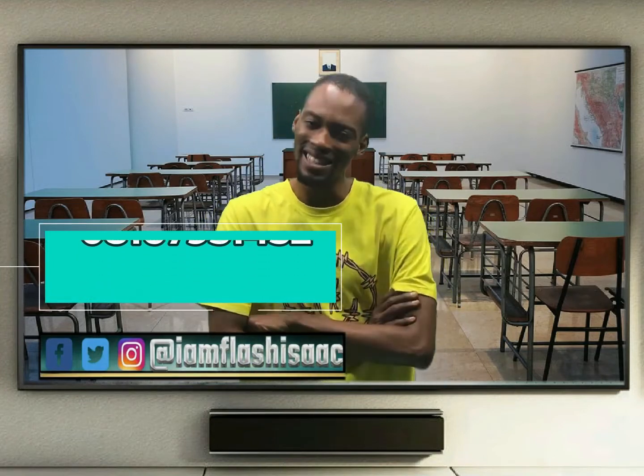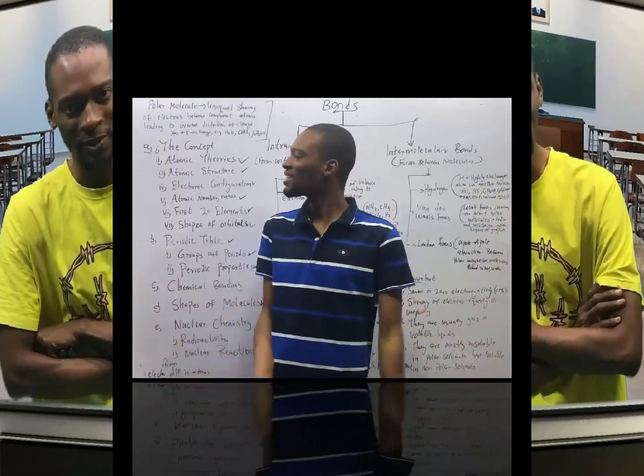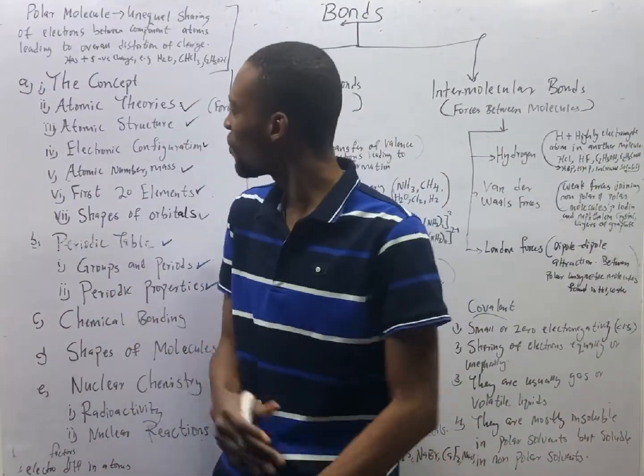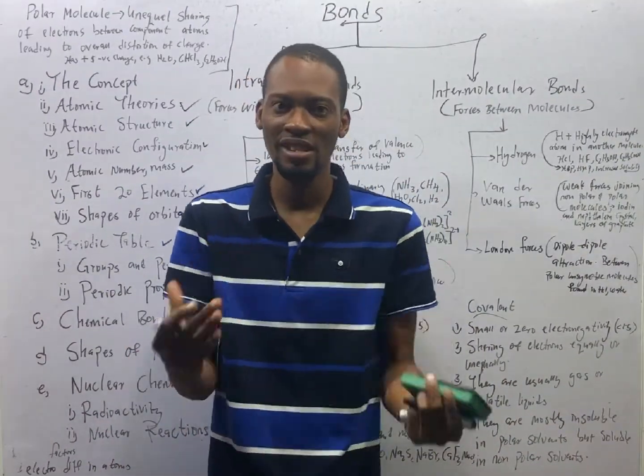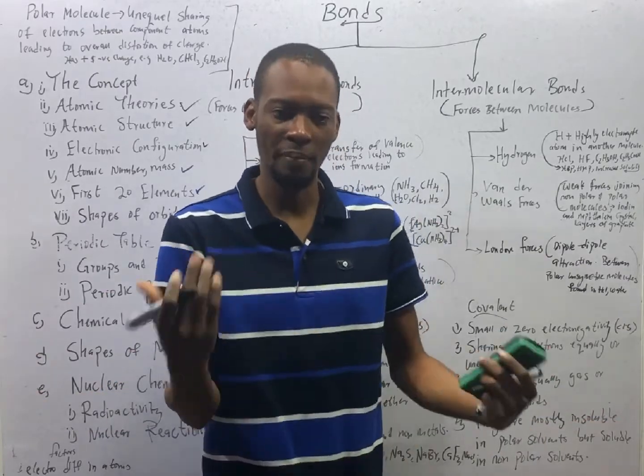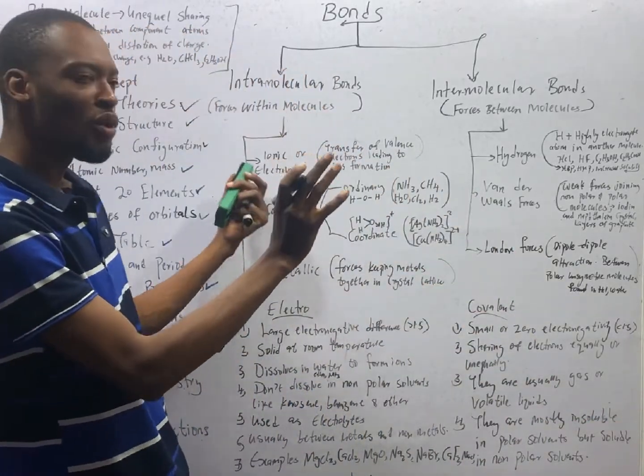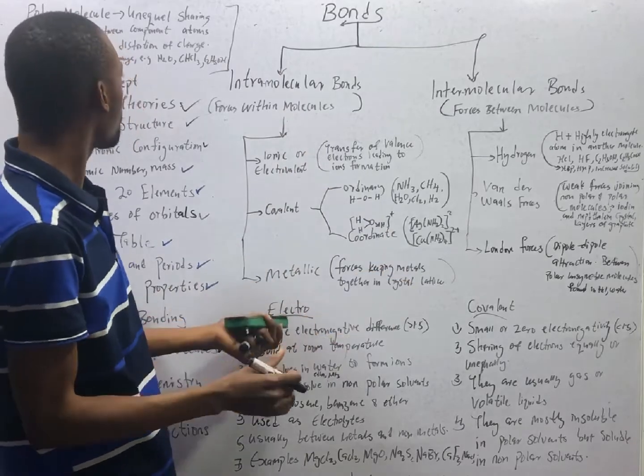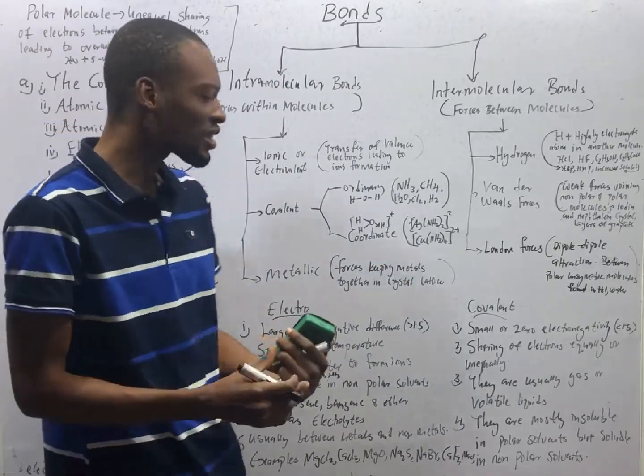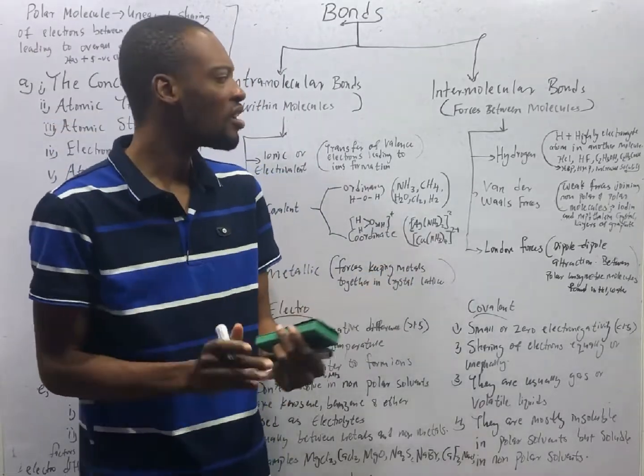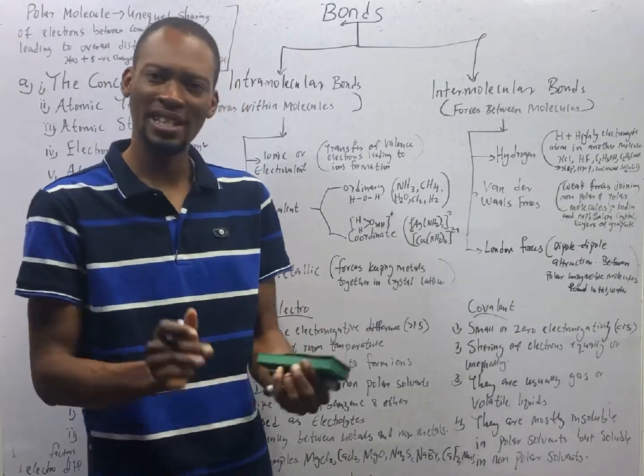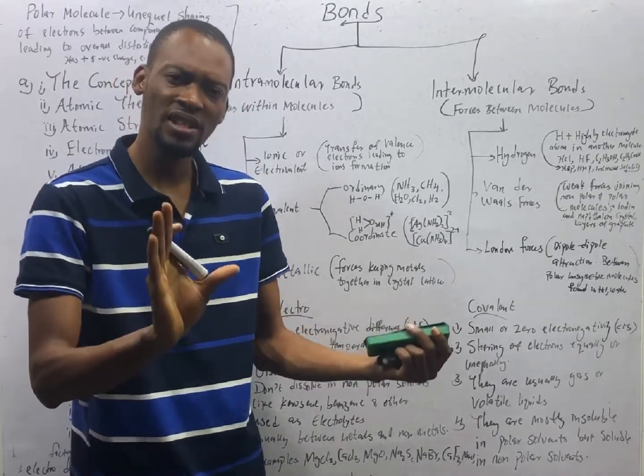Ladies and gentlemen, it is time. This is episode number 21 of the 120 days to jam chemistry with Flash Isaac. Ladies and gentlemen, I present chemical bonding. Some of the things I wrote on the board are not actually for you to see them. They are for me to maintain details so that I don't miss anything.